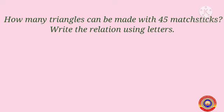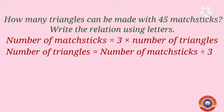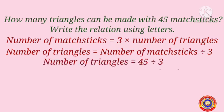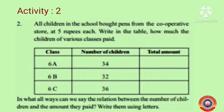Next question: how many triangles can be made with 45 matchsticks? Write the relation using letters. We learned that the number of matchsticks = 3 × number of triangles. Therefore, number of triangles = number of matchsticks ÷ 3. The number of triangles = 45 ÷ 3 = 15 triangles. We can write the relation using letters as t = m ÷ 3, or t = m/3.